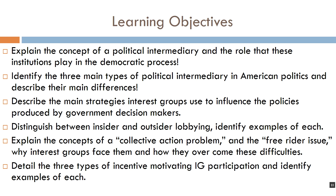Number three asks you to describe the main strategies interest groups utilize to influence the policies produced by government decision makers. Number four asks you to distinguish between insider and outsider lobbying tactics and identify examples of each. Number five: explain the concept of a collective action problem, and in particular the free rider issue, and how interest groups face and overcome these problems.